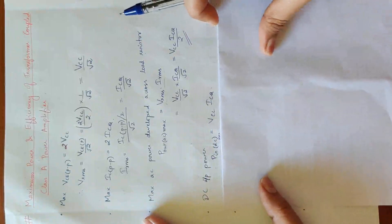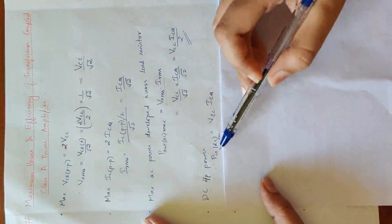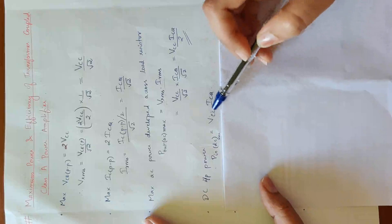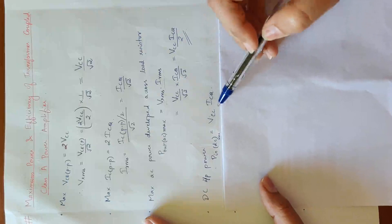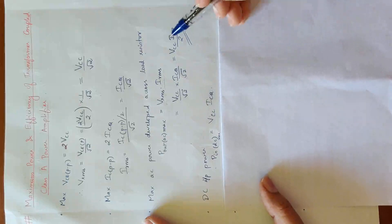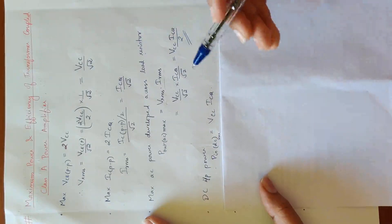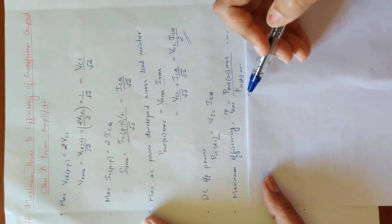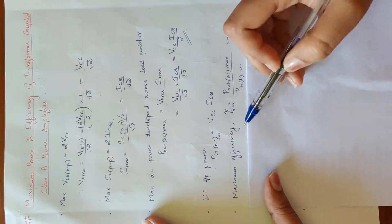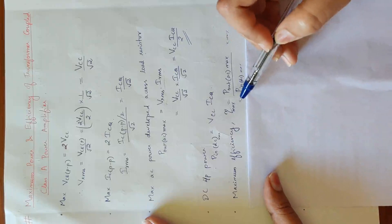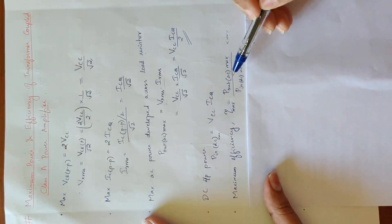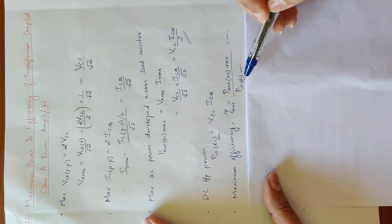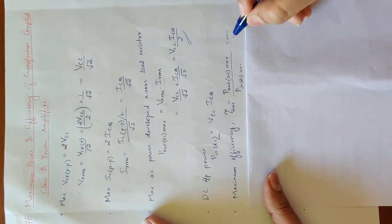DC input power is VCC into ICQ. I will substitute ICQ and add the ratio. Maximum efficiency, overall efficiency, is output AC power divided by input DC power, multiplied by 100.